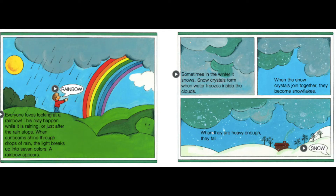Everyone loves looking at a rainbow. This may happen while it is raining or just after the rain stops. When sunbeams shine through drops of rain, the light breaks up into seven colors and a rainbow appears.